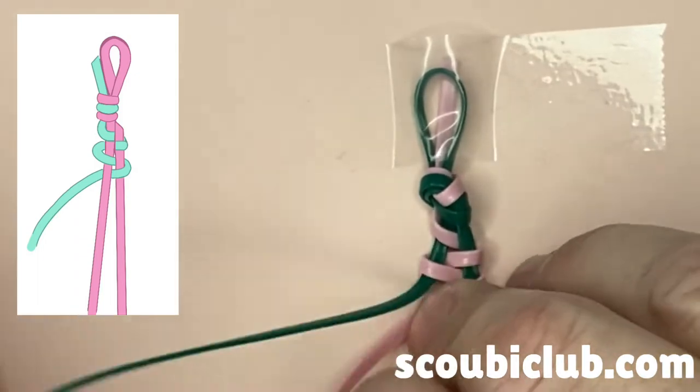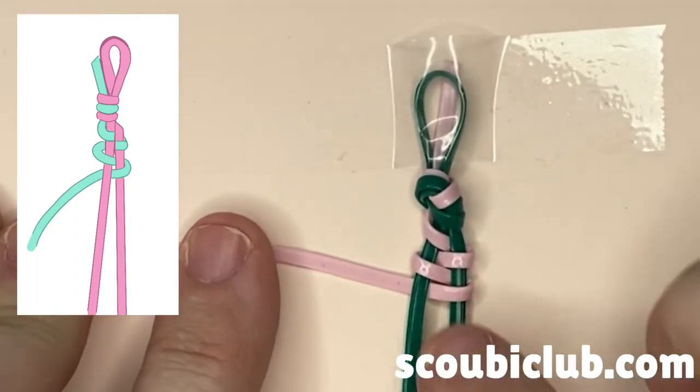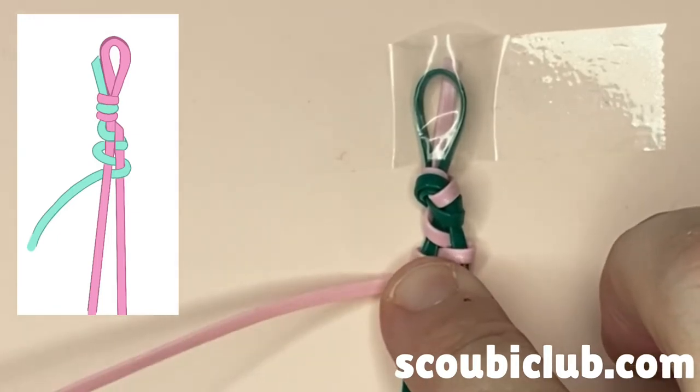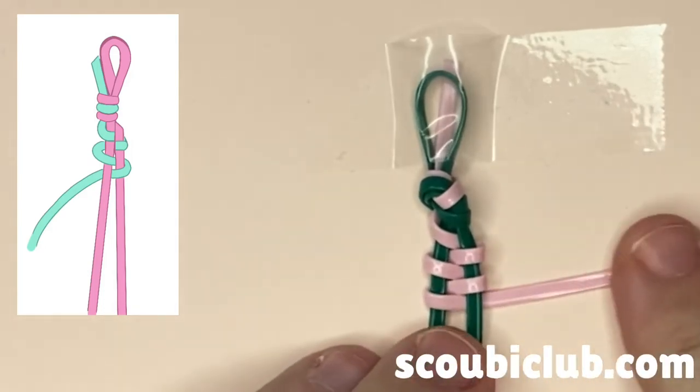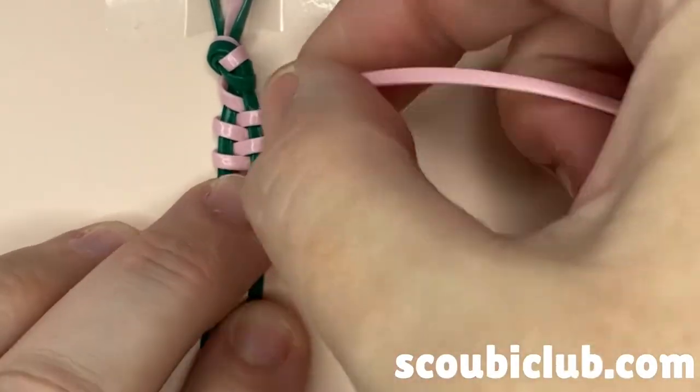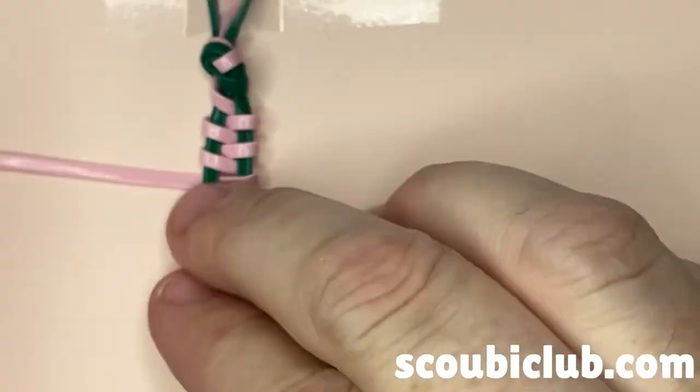Now back the other way, over the first, under the second. Continue in that way back the other way, over the first, under the second. And you can see the pattern starting to form and look just like a zipper.